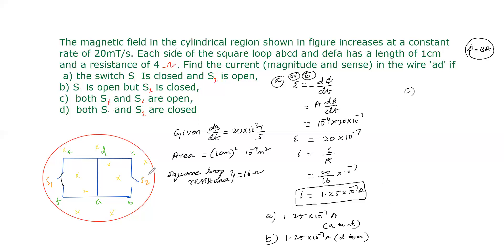For Case C, both switches are open, so it is an open loop and no current flows. The current is 0 ampere.